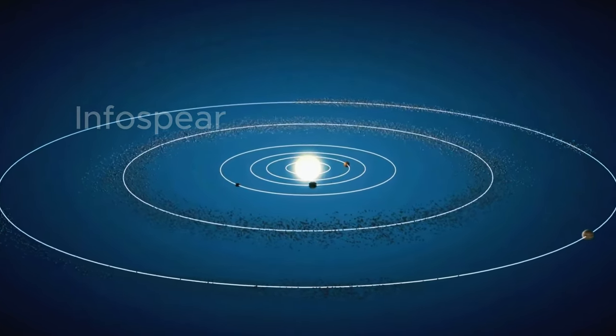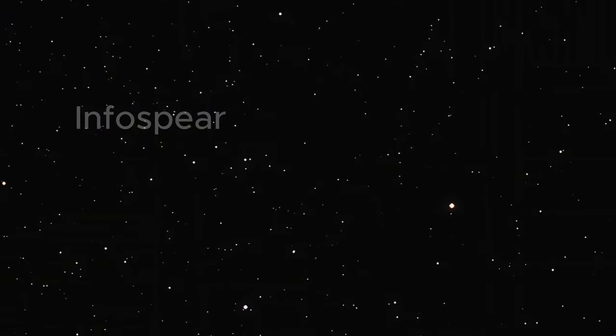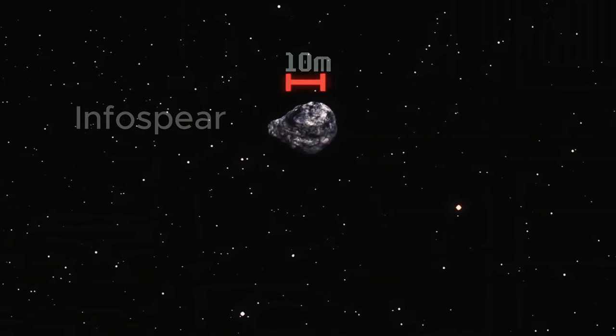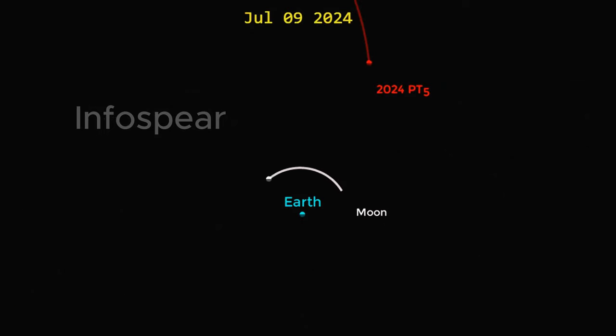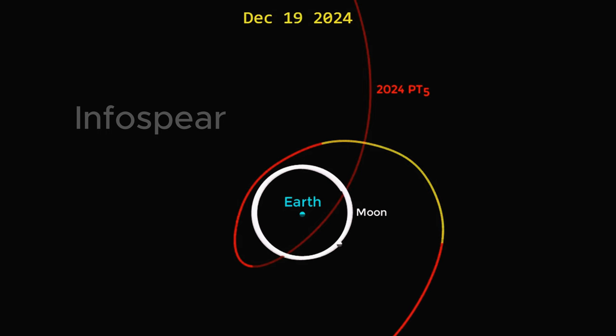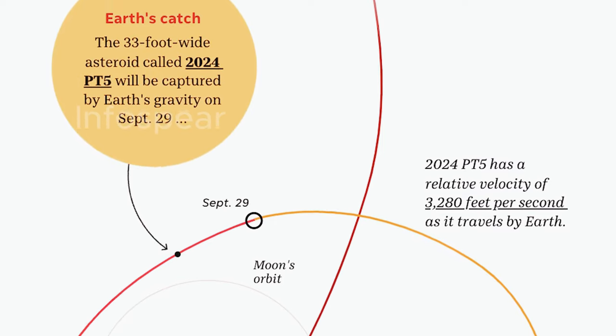At just around 10 meters wide, roughly the size of a small building, this unassuming space rock is set to orbit Earth starting on September 29th, 2024. But don't blink. By November 25th, PT5 will have broken free from Earth's gravitational embrace and continued its journey around the Sun. Though it's here for just a short cosmic minute, this mini moon's brief visit is packed with significance.